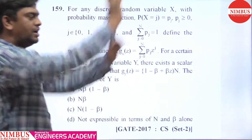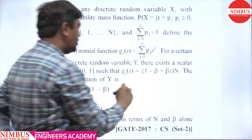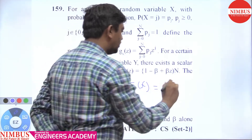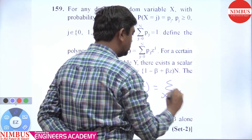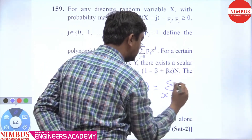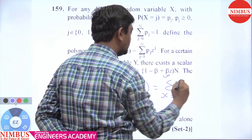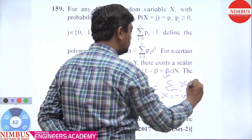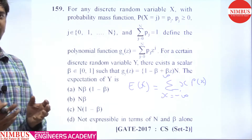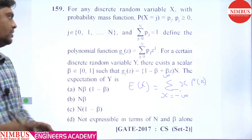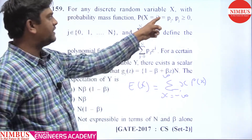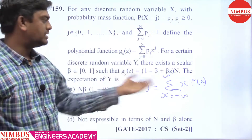To find the mean of X, the simple formula is: summation x equal to minus infinity to infinity of x into P(x). If I need to find the mean of X or the expectation of X. Notice here that X is given in the form x equal to j.